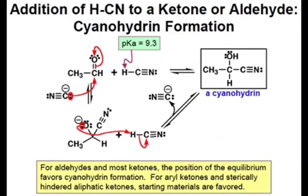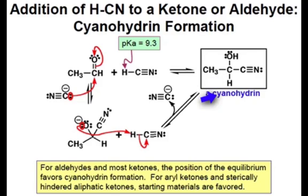Finally, we'll take a more detailed look at the addition of cyanide anion to a carbonyl compound to form cyanohydrins. As you see in the yellow box here, for most ketones and for all aldehydes, the position of the equilibrium favors the cyanohydrin. I would ask you to pause the video now and think about why that might be the case for aldehydes and sterically unhindered ketones.